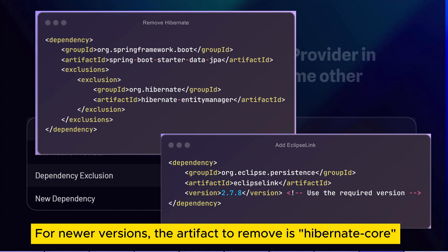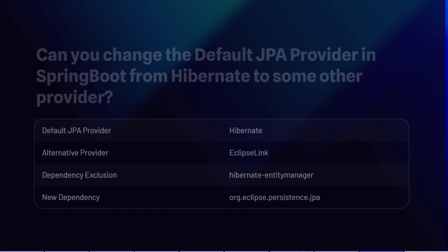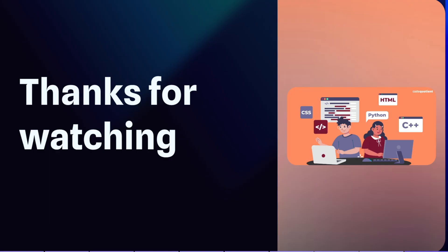After excluding Hibernate, we add the EclipseLink dependency with its group ID and artifact ID — we can use Maven Repository to find the correct details for any version. That is the only change needed: after this, Spring Data JPA will use EclipseLink as the JPA provider to communicate with the database, in the same way it previously worked with Hibernate.